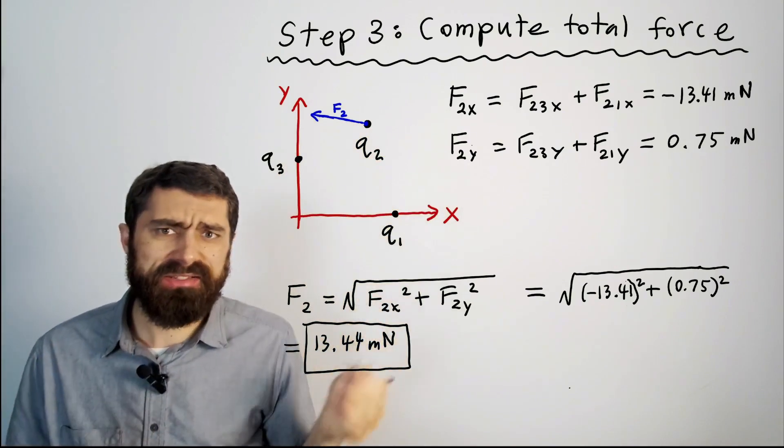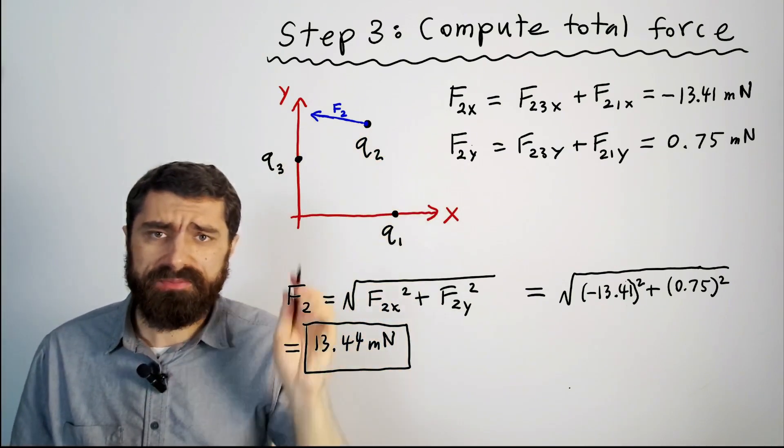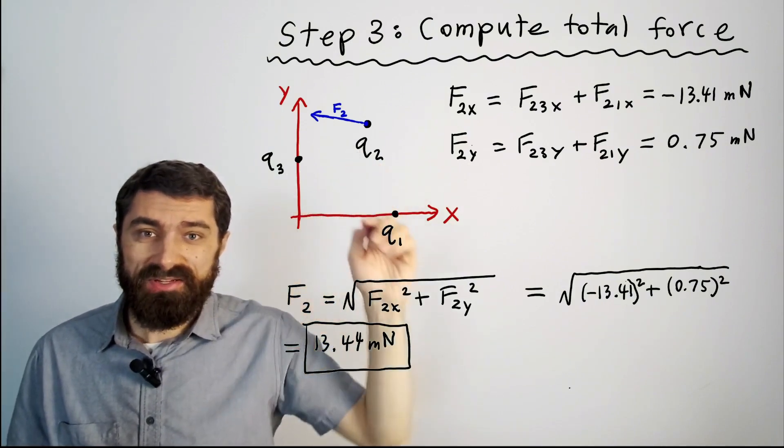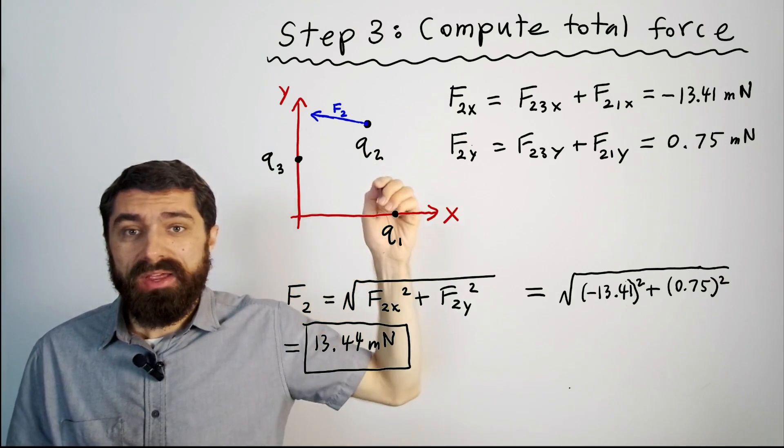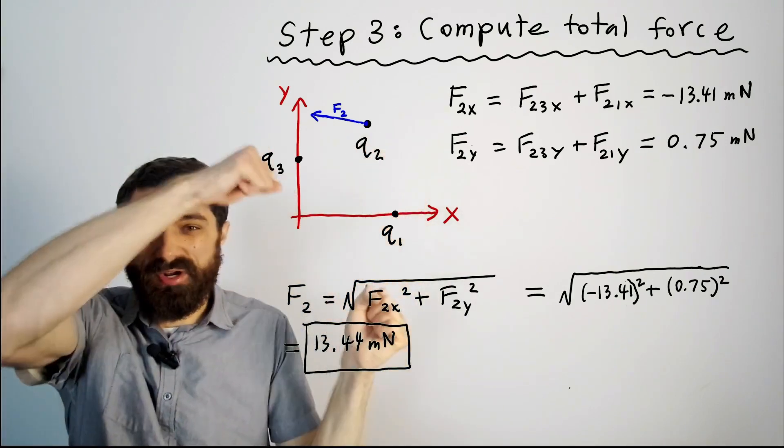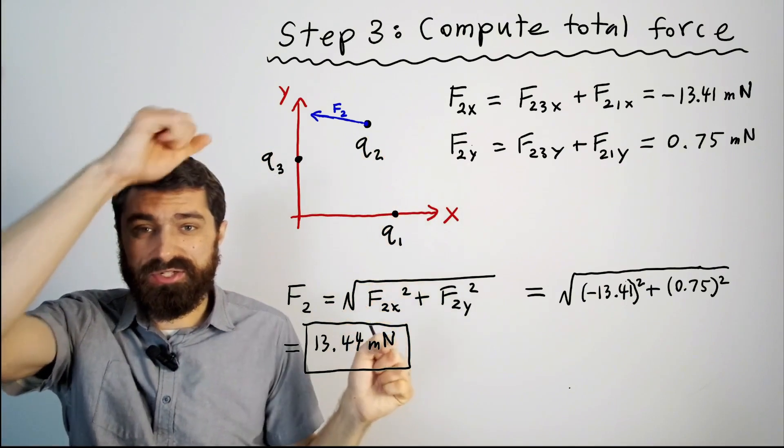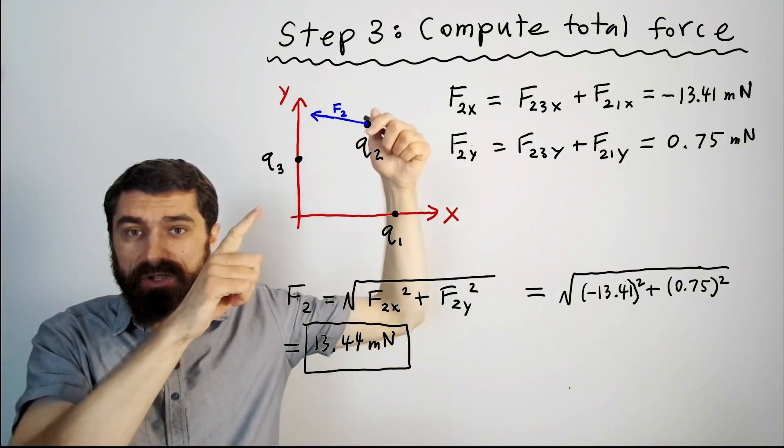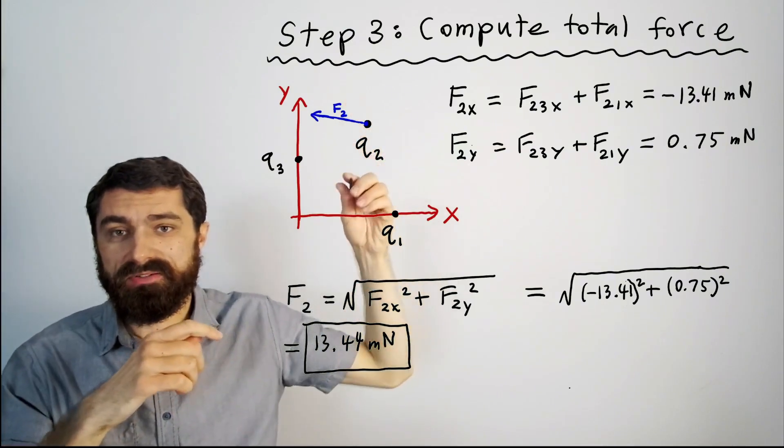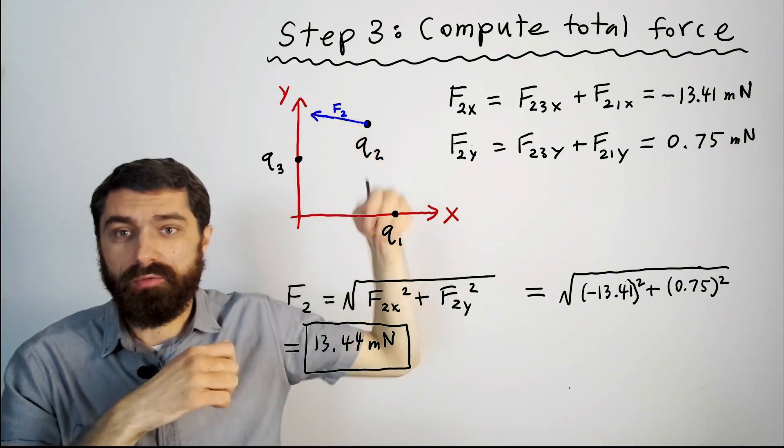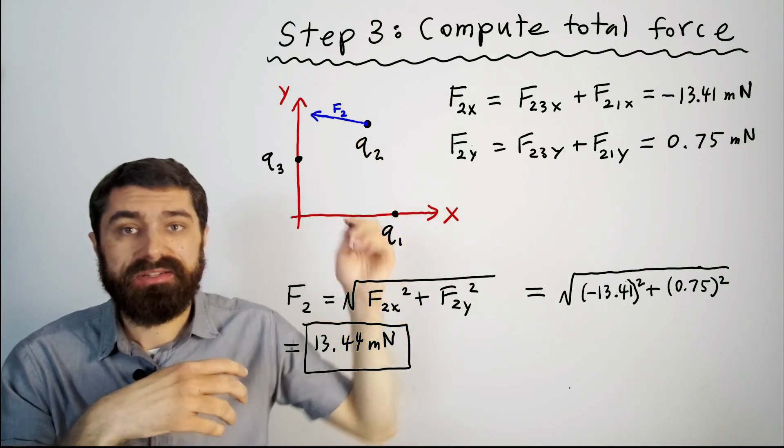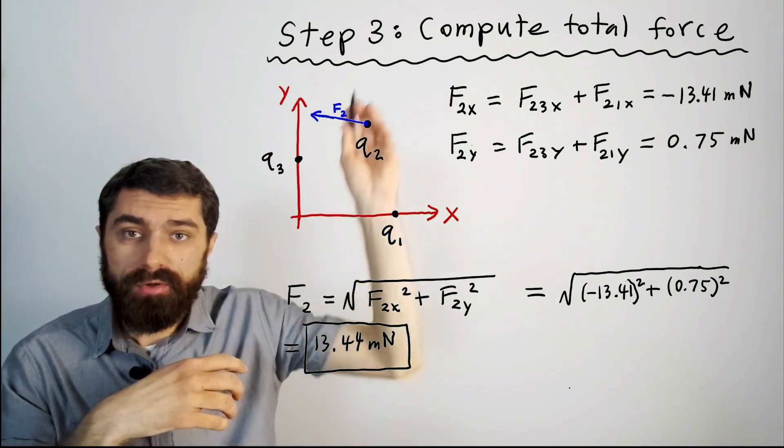I think it does because remember q3 is negative q2 is positive and q1 is positive so the forces between these charged particles they're repelling one another they're pushing up against each other whereas q2 is actually attracted to q3. So you have these counteracting forces in the y direction so they tend to cancel each other out and so it makes sense that the y component of your force would be relatively small.